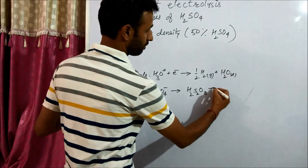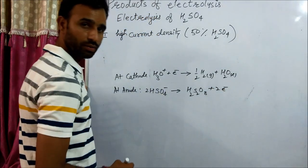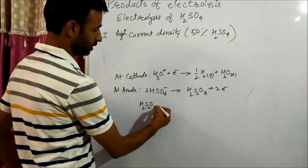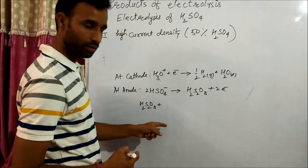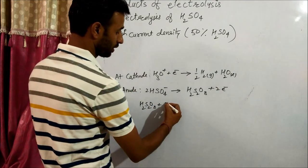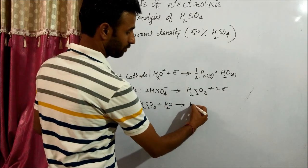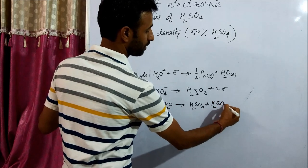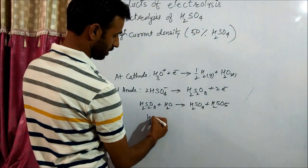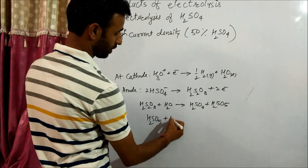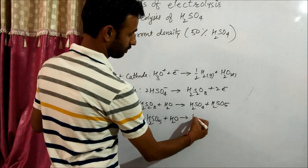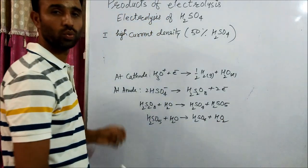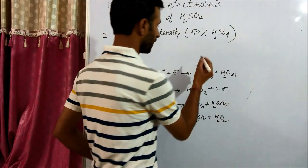And this H2S2O8 when distilled with water gives H2O2. Like first it is hydrolyzed to give H2SO4 plus H2SO5. And then H2SO5 gives H2SO4 and H2O2.